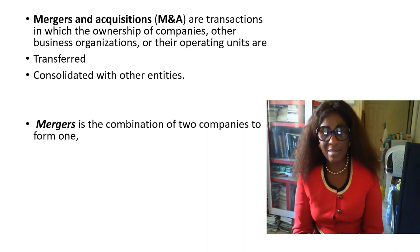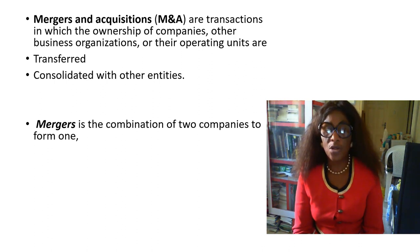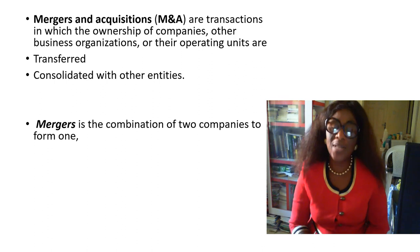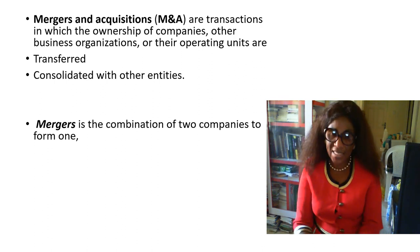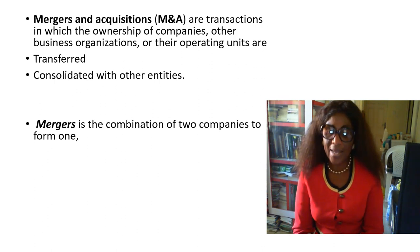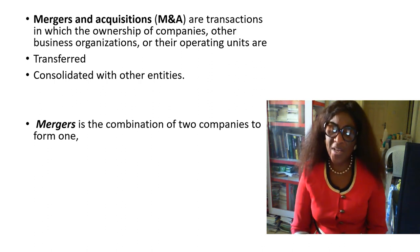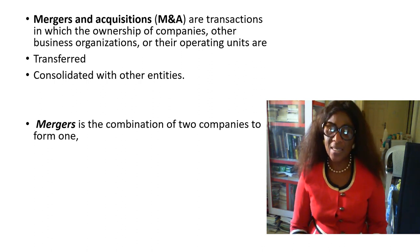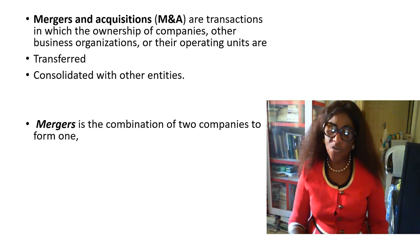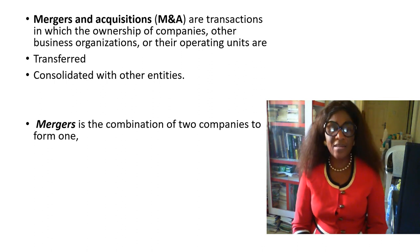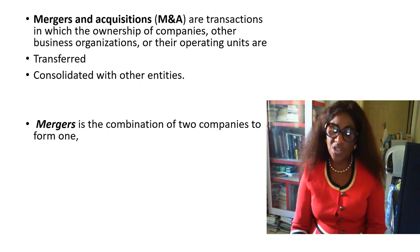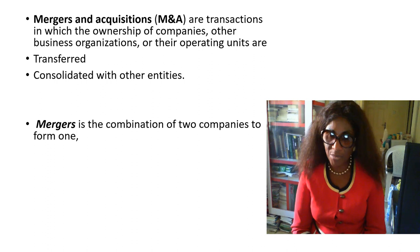A merger is a combination of two companies to form one — just as the name implies, to merge, to bring them together. Usually when companies merge, it is because there are areas of comparative advantage; this one has certain strengths, this one has certain opportunities or strengths, so they come together because each one has something to offer.